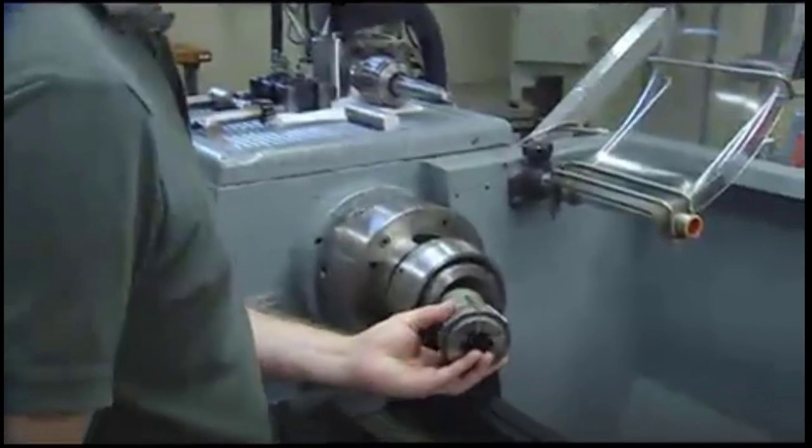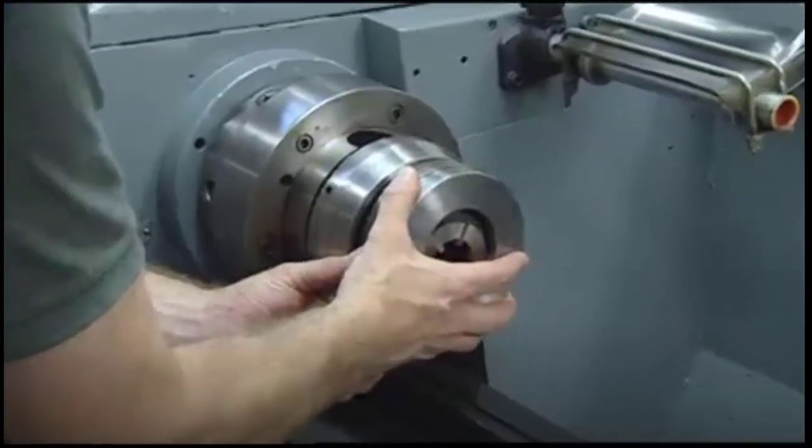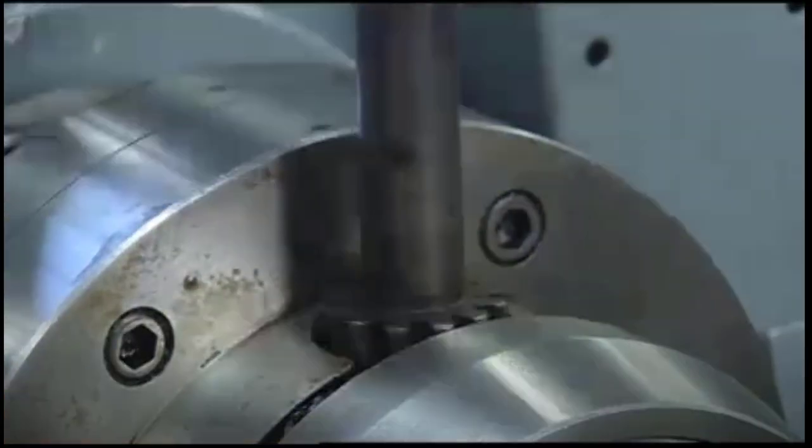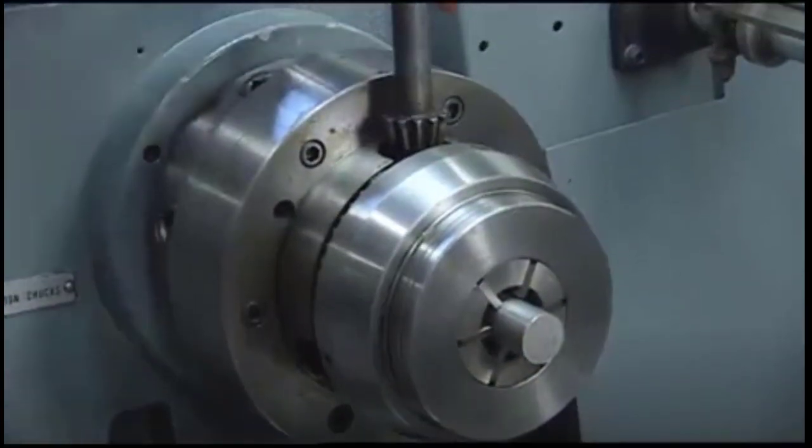Next, insert the flex collet in the chuck, and then replace the cap by turning the key clockwise. Once the cap has been set back in position, place the workpiece inside the collet and tighten the chuck with the key to secure it.